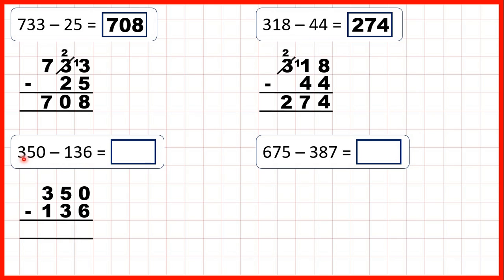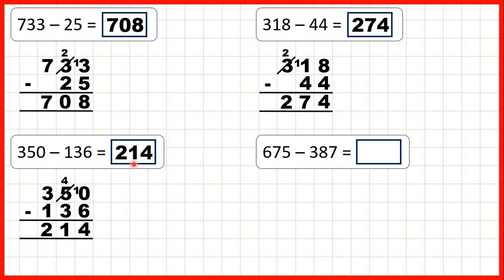Now 350 minus 136. Starting with our ones, we have 0 minus 6, but 6 is larger than 0, so we go to the left, 1 less, 1 in front. 10 minus 6 is 4, 4 minus 3 is 1, and 3 minus 1 is 2, so that gives us 214.